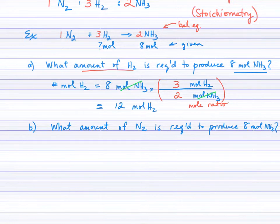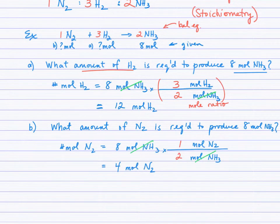Part B asks what amount of N₂ is required to produce the same 8 moles of ammonia. The required is moles of N₂, starting with 8 moles of NH₃. Set it up so moles of NH₃ cancel. Fill in the balancing coefficients for N₂ and NH₃: 1 and 2. So 8 times 1 divided by 2 equals 4 moles of N₂.